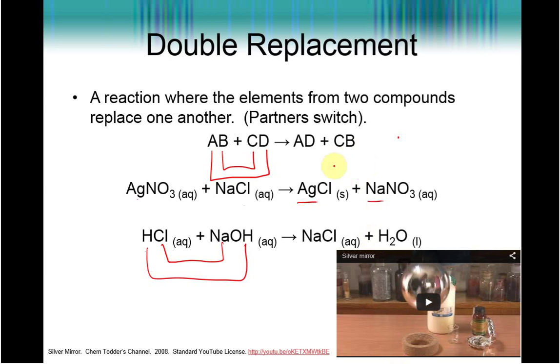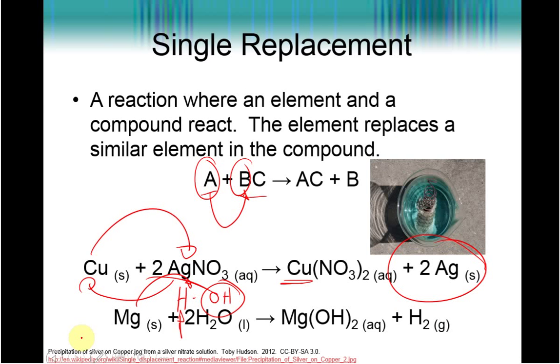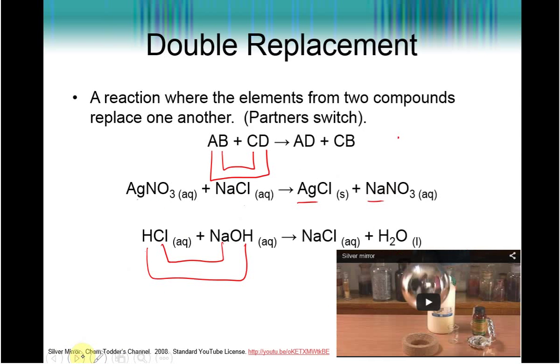Now, guys, here the compounds look very similar. But make sure, remember over here, magnesium is a, when it forms an ion is two plus. Hydroxide is one minus. Make sure you are considering the chemical composition of each compound. Okay? Write the formulas before you balance.